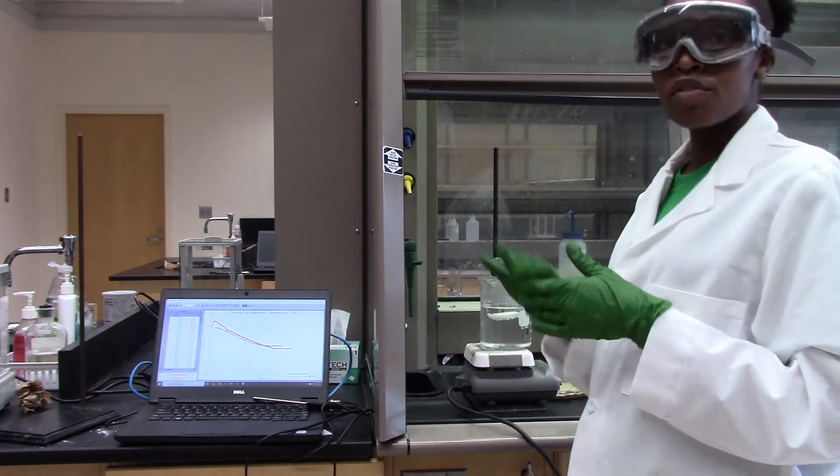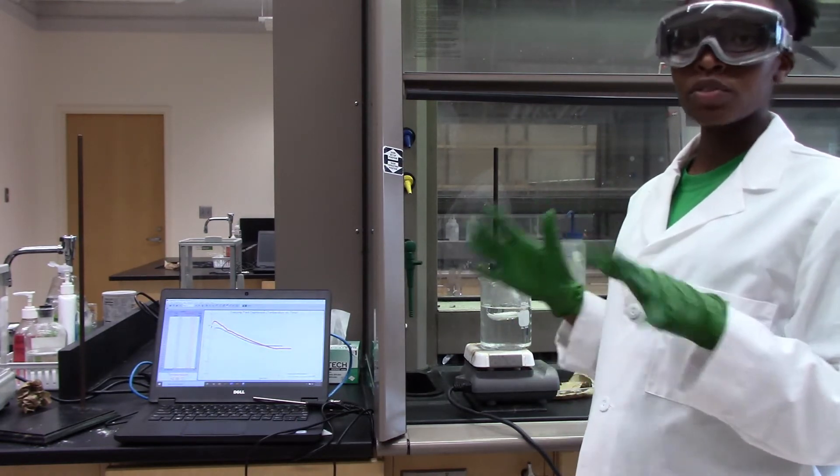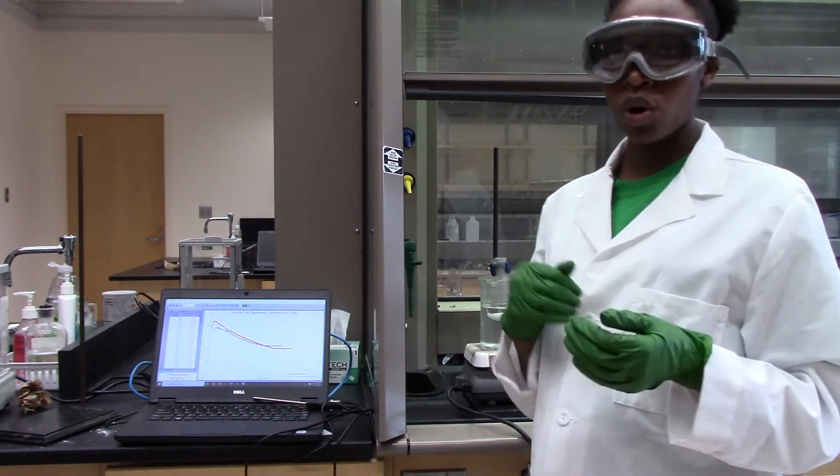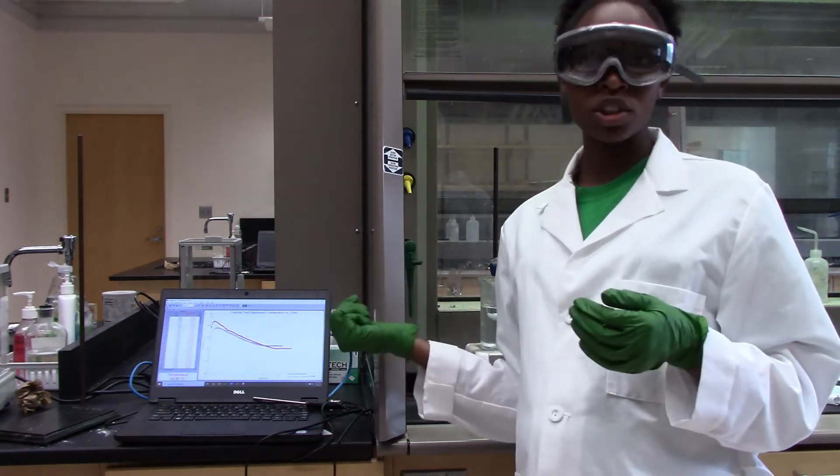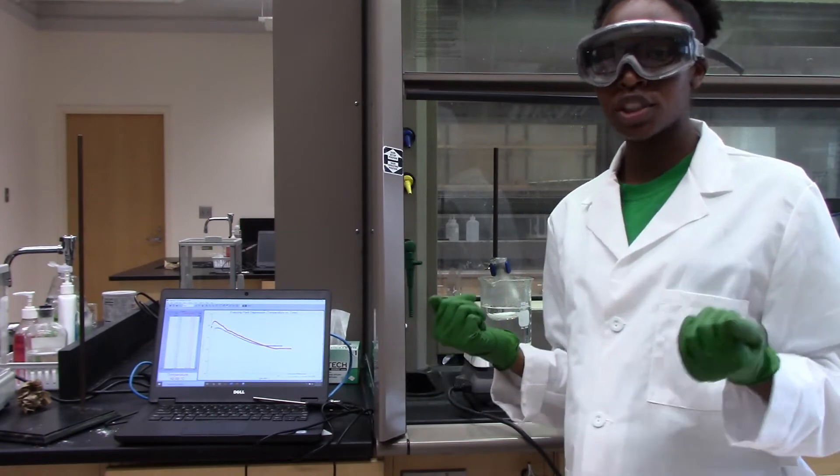So I'll just wait for the lauric acid to melt and wait for the temperature to be about 60 degrees Celsius. And I'm going to start monitoring the temperature change as it drops from 60 until I get that freezing point temperature.